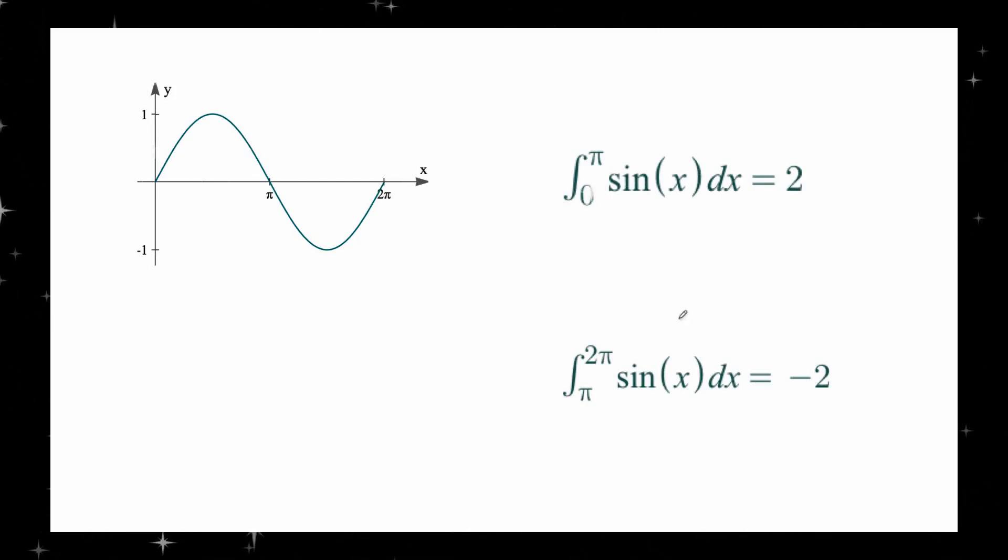On the other hand, the definite integral of the same function, but from π to 2π is -2. So, to get the area of this shaded region, we need to take the absolute value of the integral, which is the absolute value of -2, which is 2.